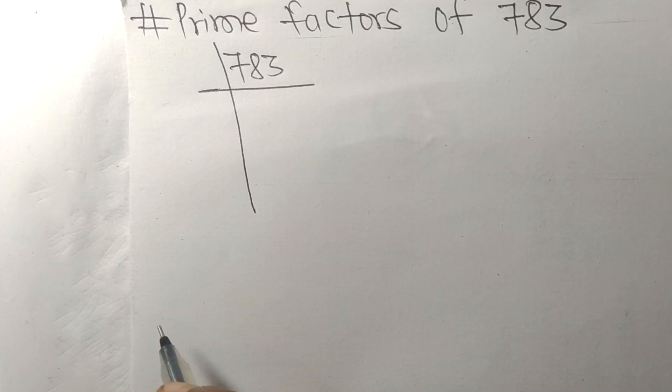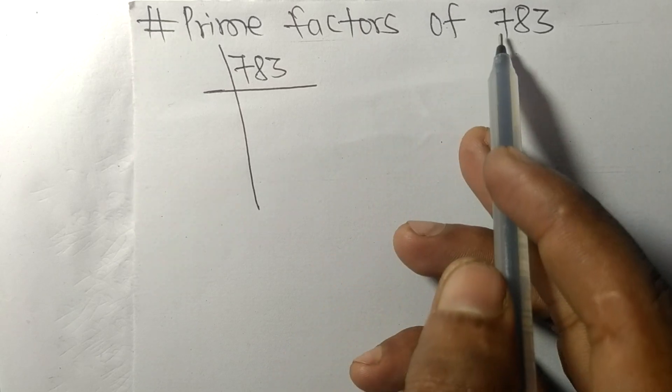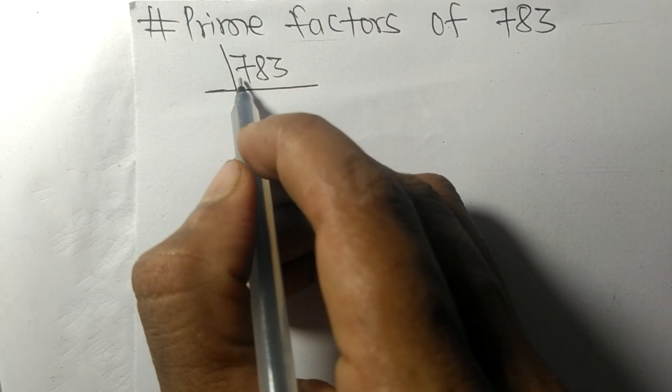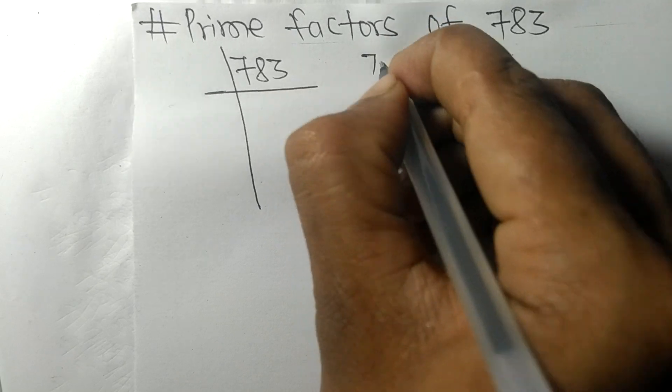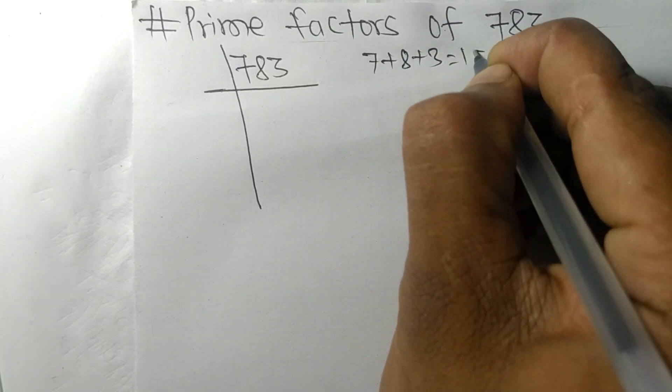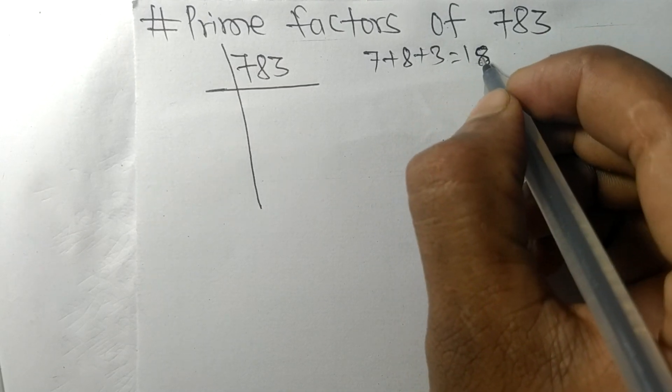Today in this video we shall learn to find the prime factors of 783. When we add all these numbers, 7 plus 8 plus 3, we get 18, and 18 is exactly divisible by 3.